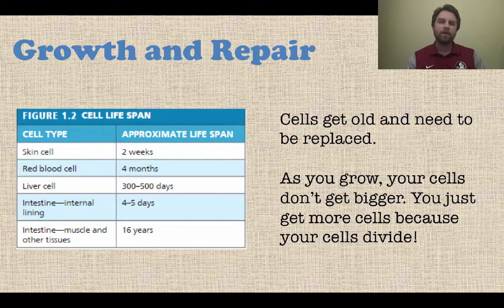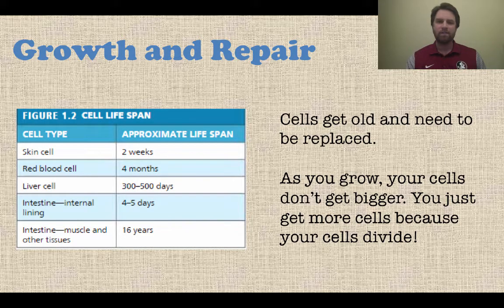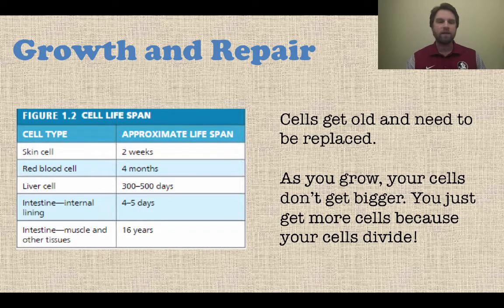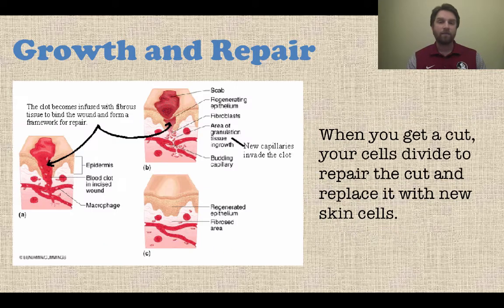First, growth and repair. When cells get old, they need to be replaced in an efficient way. And also as you grow, your cells don't actually get bigger — you just get more cells because they actually divide. Here's a quick chart of different types of cells and their approximate lifespan. Skin cells only live about two weeks before they are replaced, red blood cells about four months, and so on. Not all cells stay with you for the entire span of your life. So also when you get cut, your cells are going to divide and repair that cut with new cells.